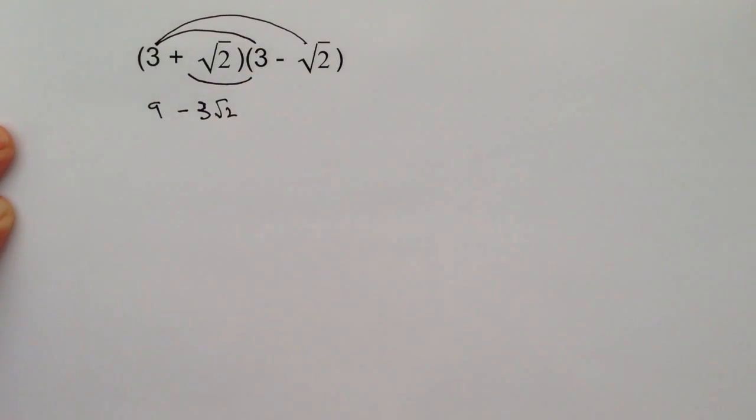Then I'm going to multiply out the next piece, which is plus the root of two times three. That's going to be plus three root two.